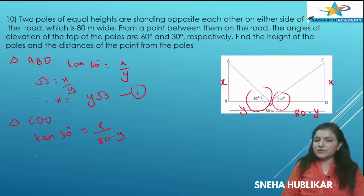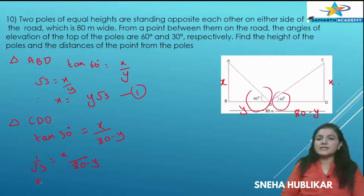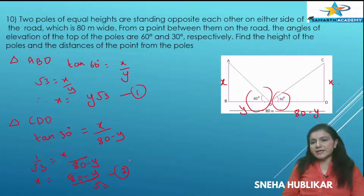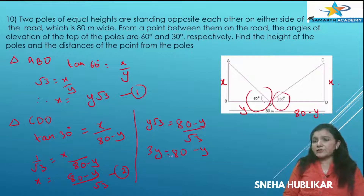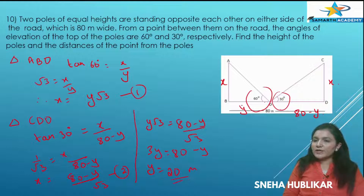Tan 30 is 1 by root 3, equal to X by (80 minus Y). So X equals (80 minus Y) by root 3. Mark this as equation 2. From equations 1 and 2, the left-hand sides are equal, so: Y root 3 equals (80 minus Y) by root 3. Cross-multiplying gives 3Y equals 80 minus Y, so 4Y equals 80, therefore Y equals 20 meters.